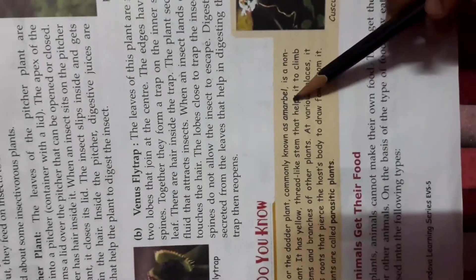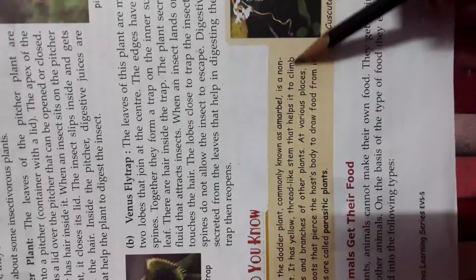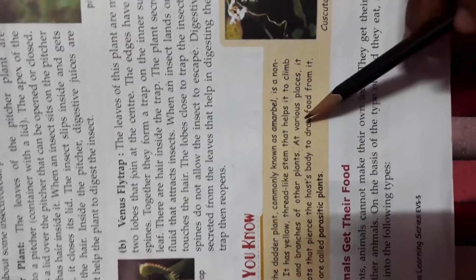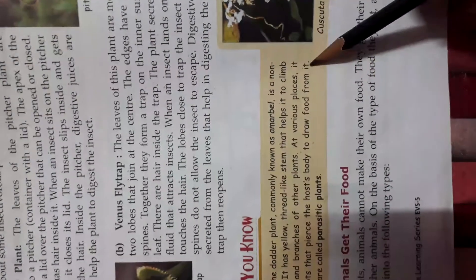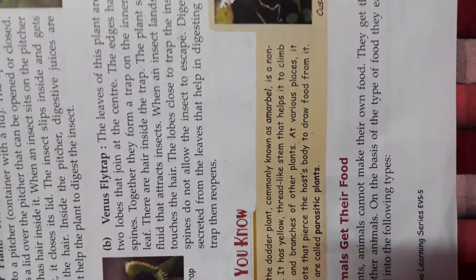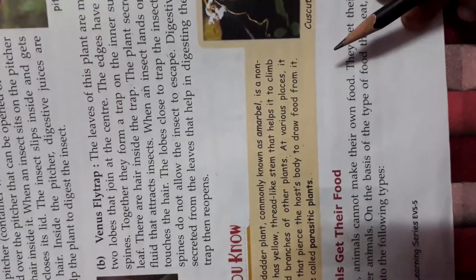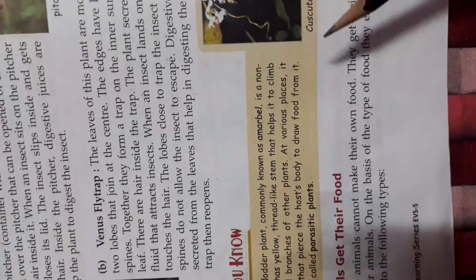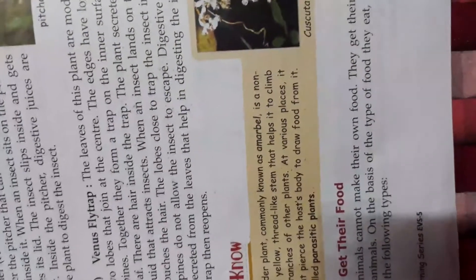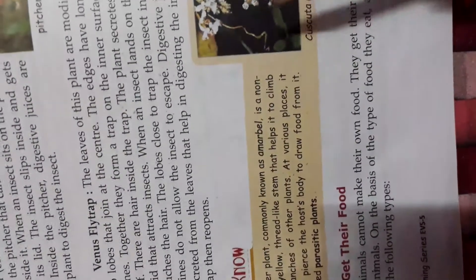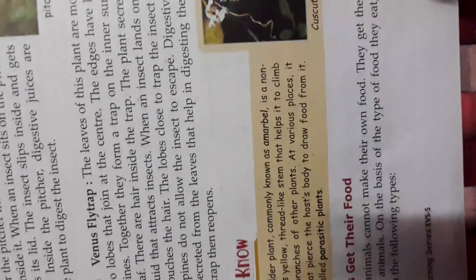Kuskuta, commonly known as amarbel, is a non-green plant. It has yellow thread-like stems that help it climb over stems and branches of other plants. At various places it develops roots that pierce the host body to draw food from it. Such plants are called parasite plants. This non-green plant with yellow thread-like stem wraps around and traps the host plant — it is a parasite plant.